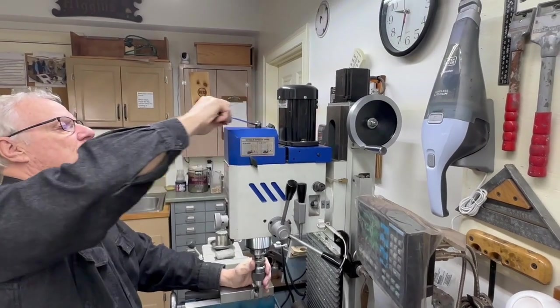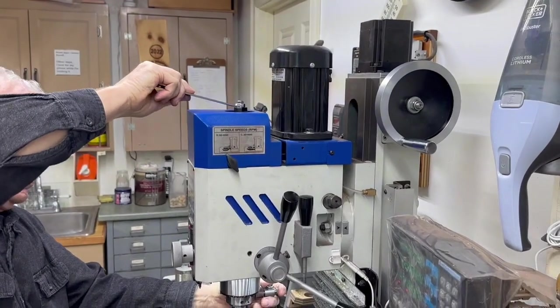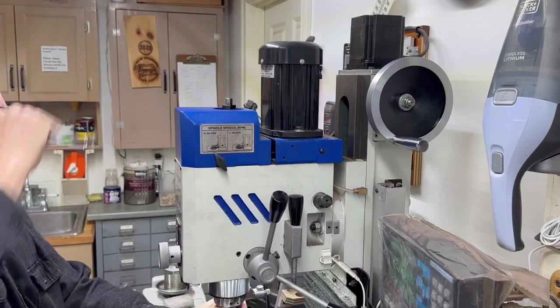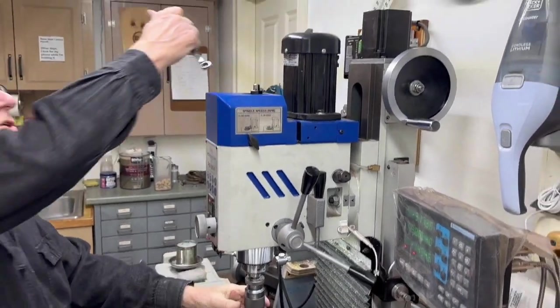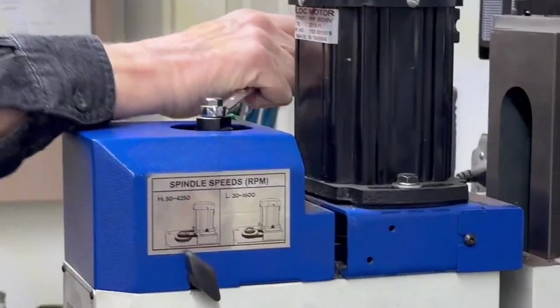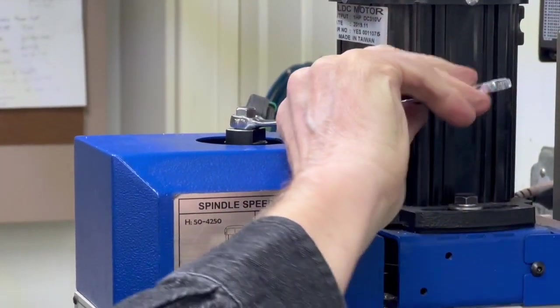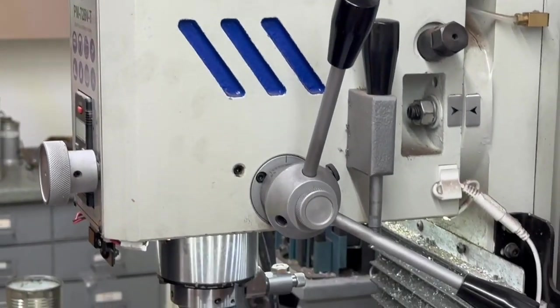Okay, so I lock the spindle and tighten it. So that's tight. Now to loosen that, I just put the wrench on this way, come one turn around, and that's loose now, and I can just unscrew it.